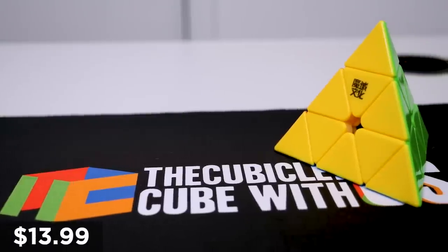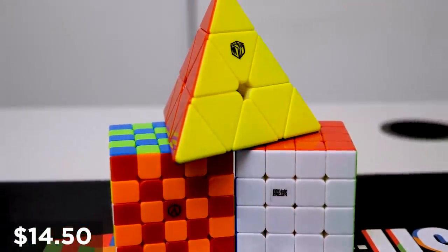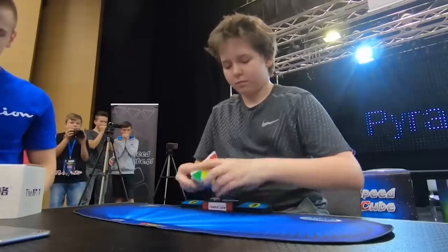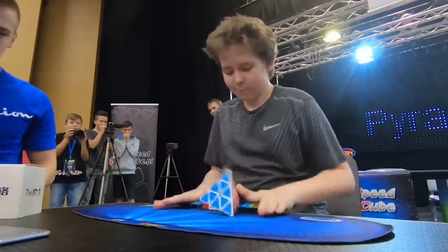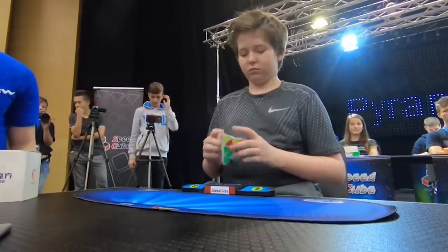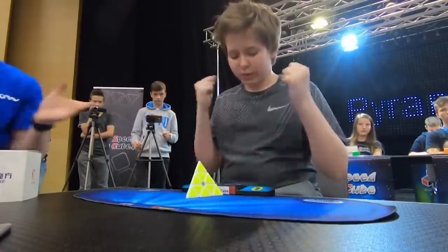Pyraminx hardware did not make any large advancements in the last year, so our picks are still the same from last year. The Moyu Magnetic Pyraminx and the X-Man Bell. The Moyu Magnetic set the first ever sub 2 official average, while the Bell scored the current world record single of 0.91 seconds. Both Pyraminxes are great and have been used to set big records and win big titles.